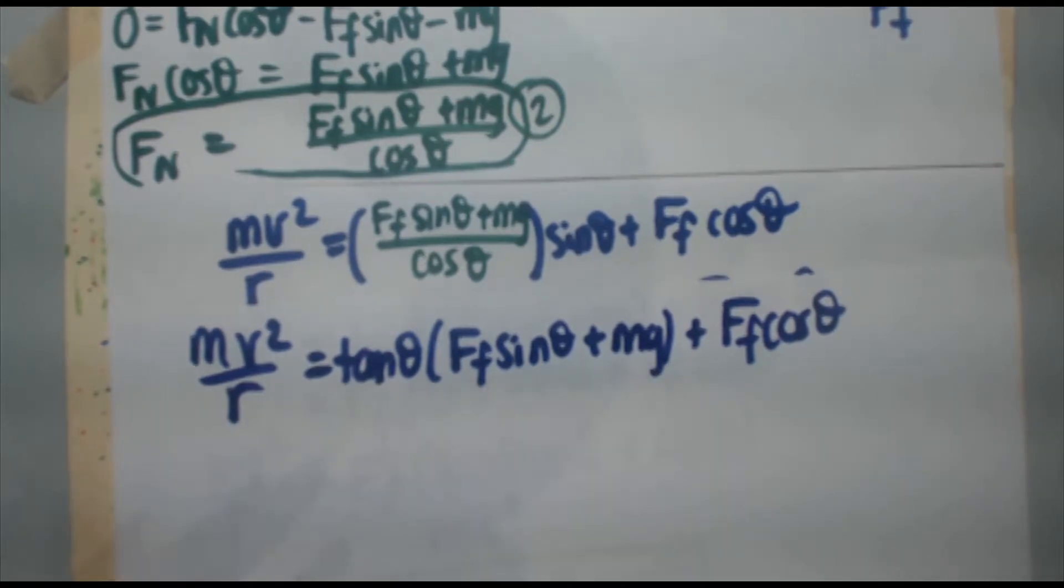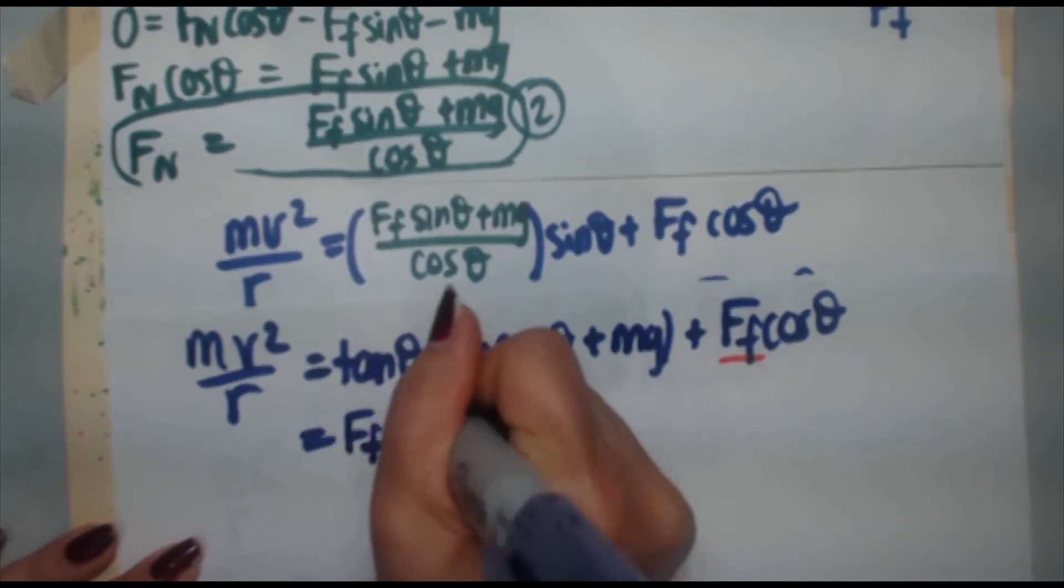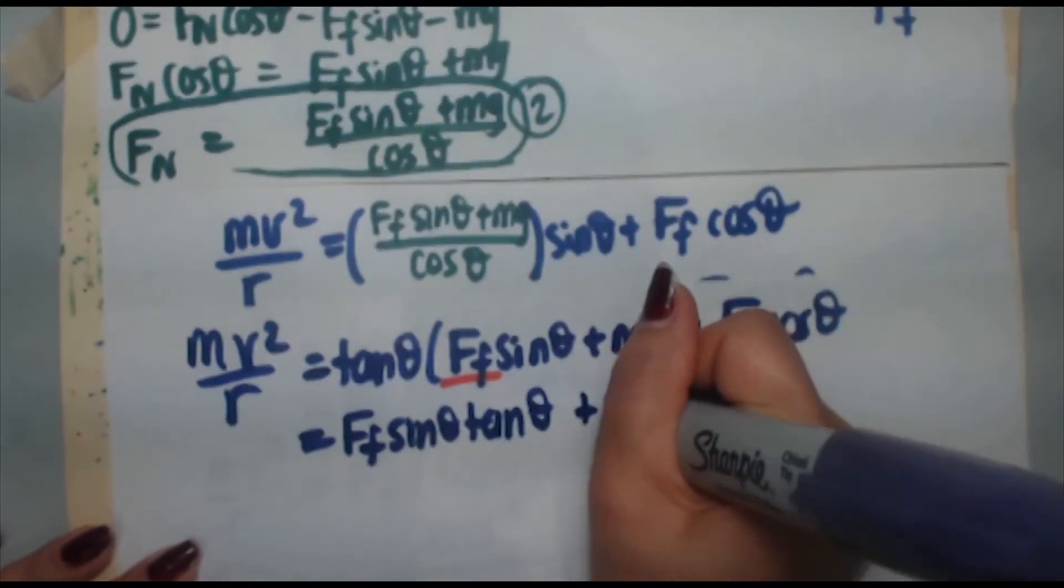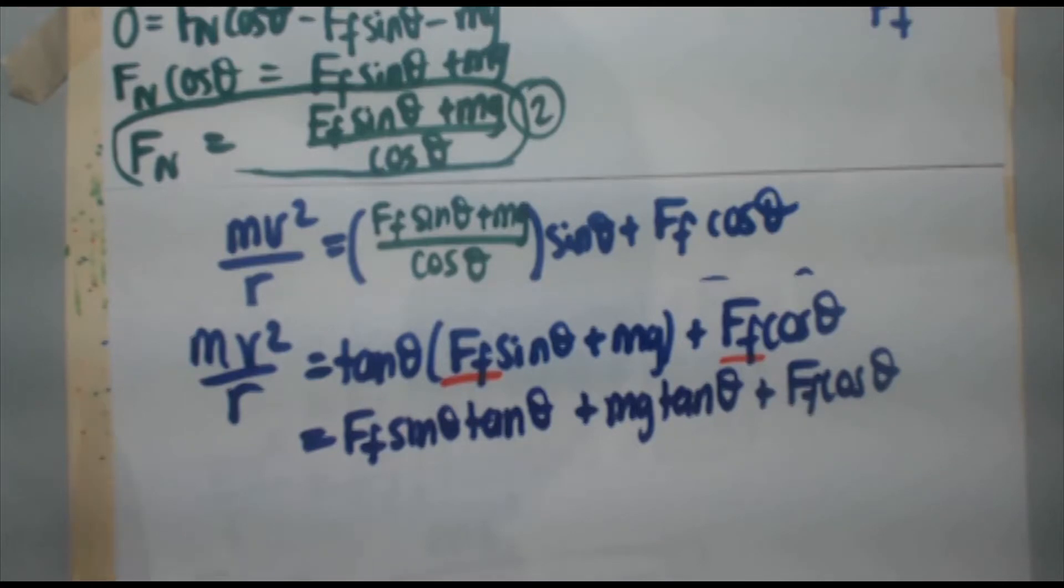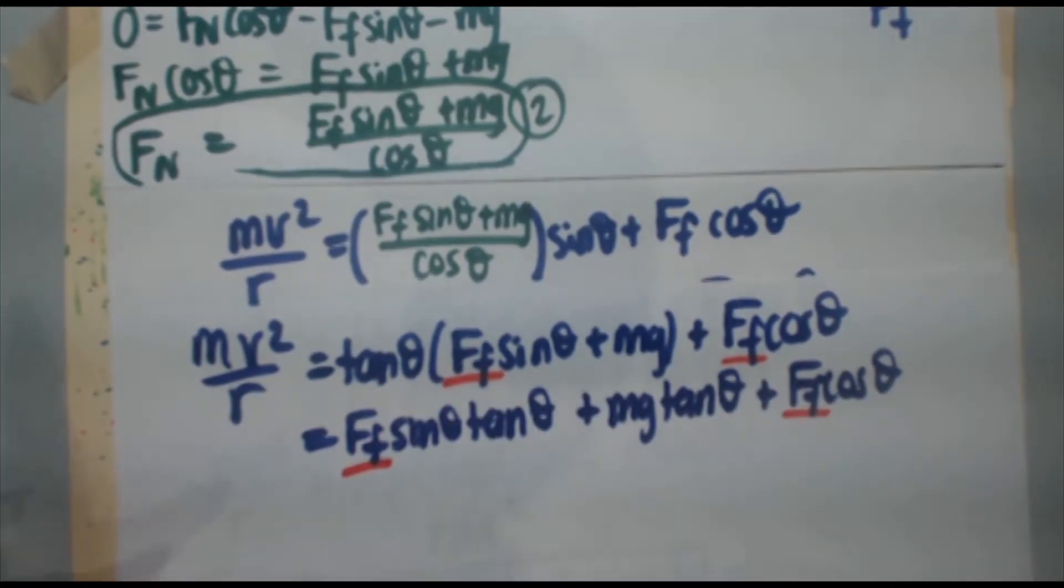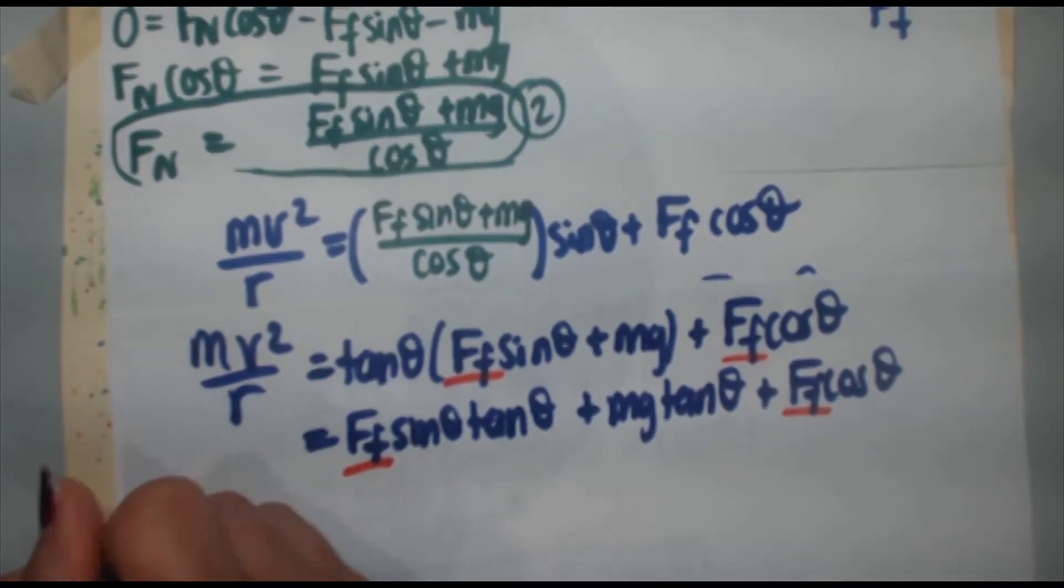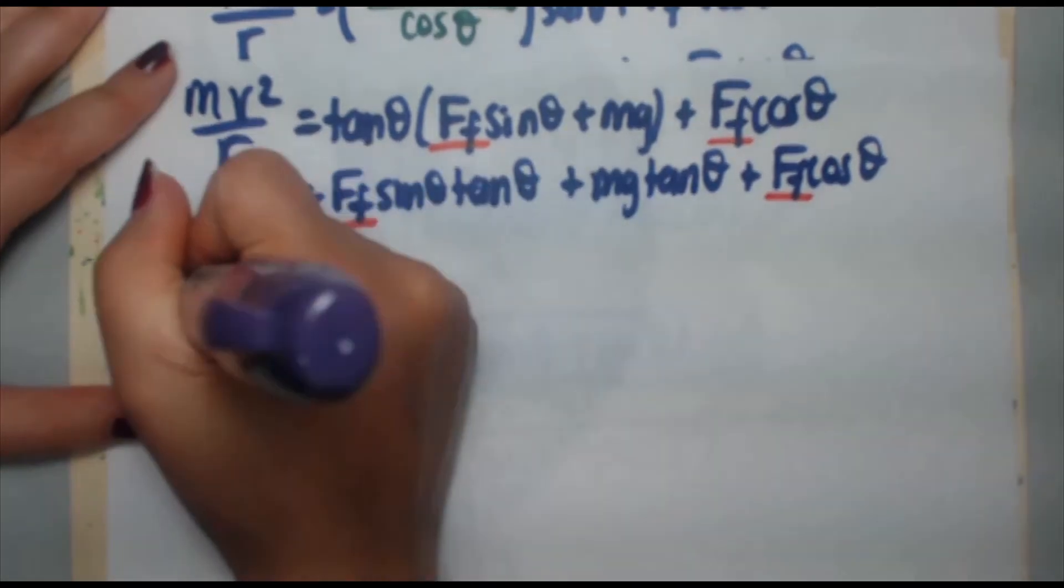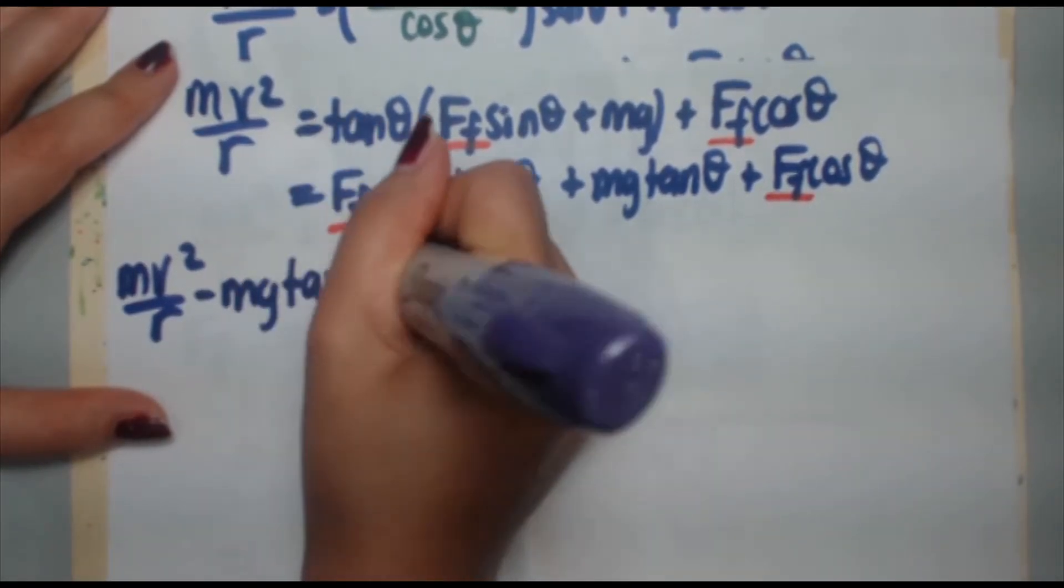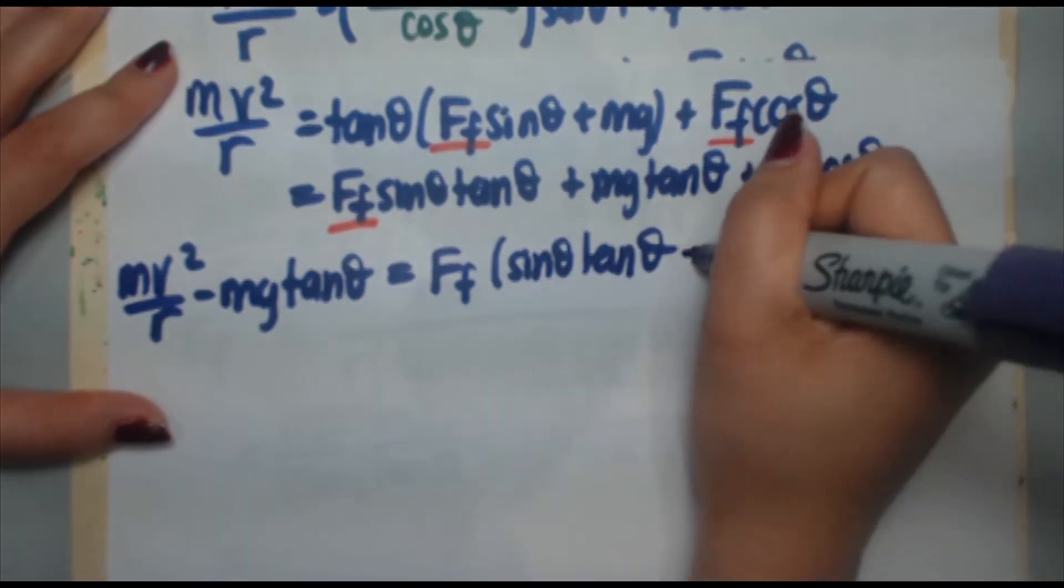We still have mv squared over r on the left. Sine theta over cos theta, that's tan theta, bracket, Ff sine theta plus mg plus Ff cos theta. Next thing I'm going to do is expand this out. Because my goal is to get force of friction, right now they're in two separate terms. So we're going to get Ff sine theta tan theta plus mg tan theta plus Ff cos theta. And all that's equal to mv squared over r.